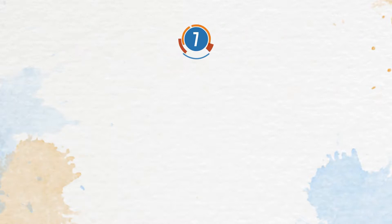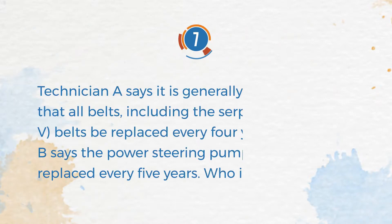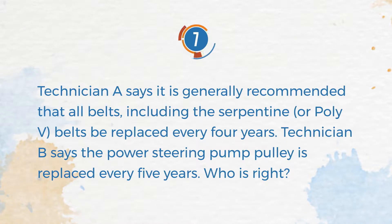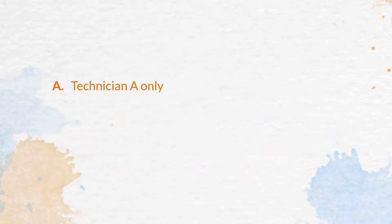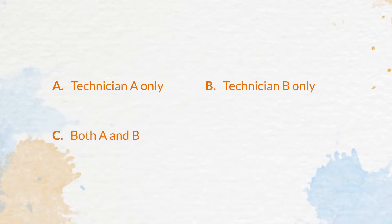Number 7. Technician A says it is generally recommended that all belts, including the serpentine or poly V-belts, be replaced every 4 years. Technician B says the power steering pump pulley is replaced every 5 years. Who is right? A. Technician A only. B. Technician B only. C. Both A and B. D. Neither A nor B.